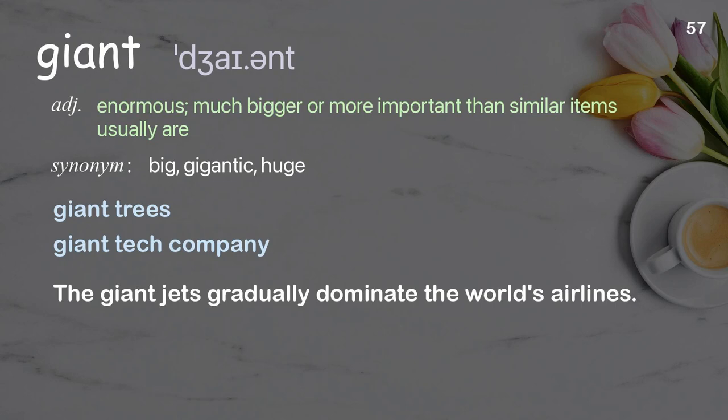Examples: Giant trees. Giant tech company. The giant jets that gradually dominate the world's airlines.